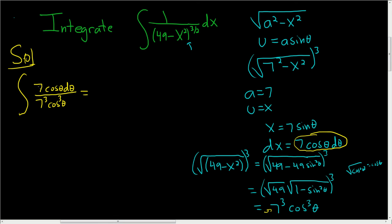So this is, well, one of the 7s cancels. So we're left with 1 over 7 squared, which is 1 over 49. And we can pull that out. And then we lose the cosine. So we have 1 over cosine squared theta d theta.